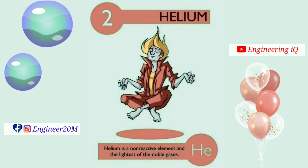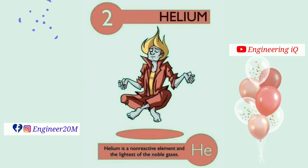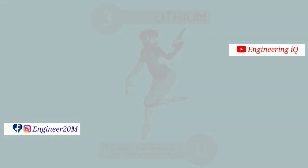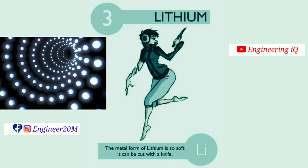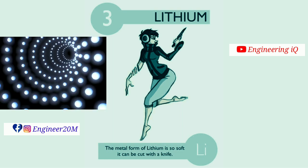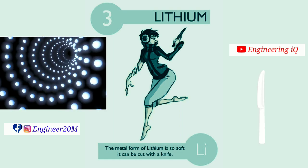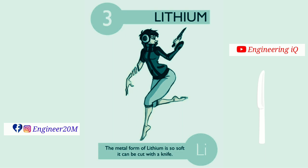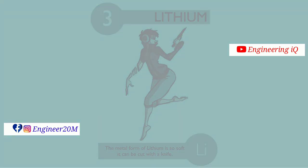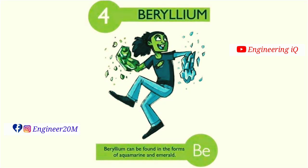Helium is denoted by He. Lithium: atomic number of lithium is 3. The metal form of lithium is so soft it can be cut with a knife. It is denoted by Li. Beryllium: atomic number of beryllium is 4.